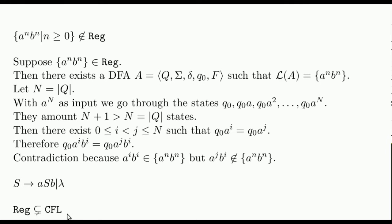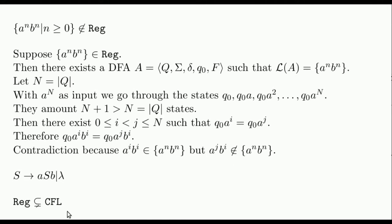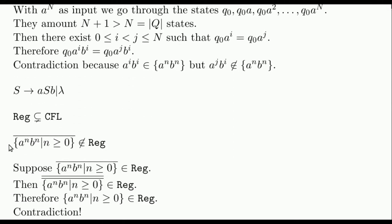The technique that we have just seen can usually be used to show the non-regularity of many languages. However, sometimes we will be able to find shorter proofs using as known fact that A^n B^n is not regular. Let's see this with an example.